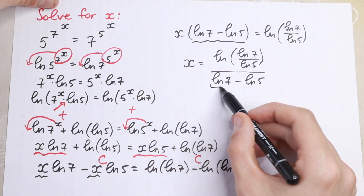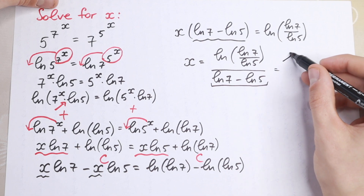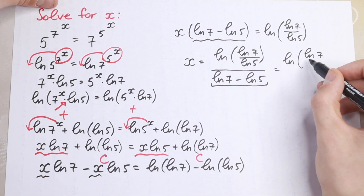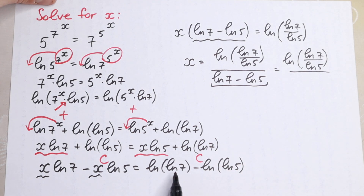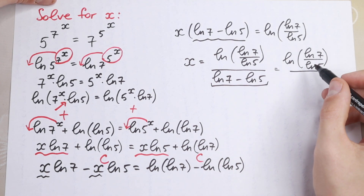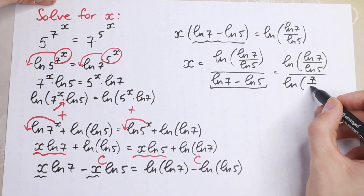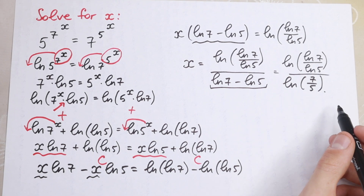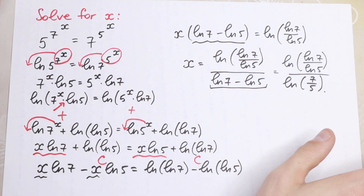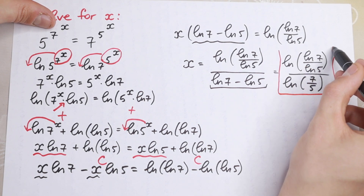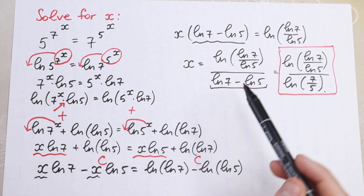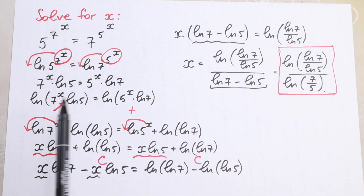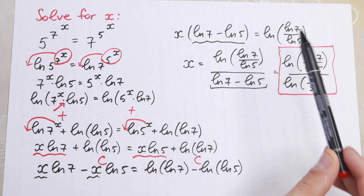Moreover, we can rewrite the denominator using the same logic. So the final answer is: x equals natural log of natural log 7 divided by natural log 5, all divided by natural log of 7 divided by 5. This is our answer to this interesting algebra problem. It's a really good problem because we used and reinforced logarithm rules — including the power rule, product rule, quotient rule, factoring, and division.